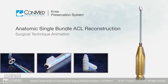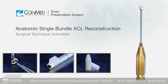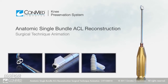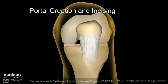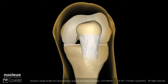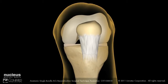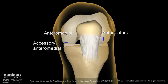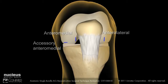Introducing the anatomic single bundle ACL reconstruction procedure. The arthroscopic surgical approach for anatomic ACL reconstruction requires three portals: an anterolateral, an anteromedial, and an accessory anteromedial.